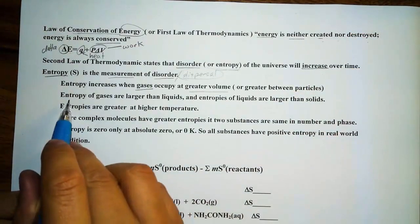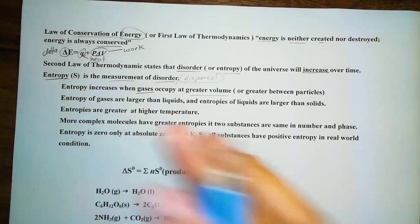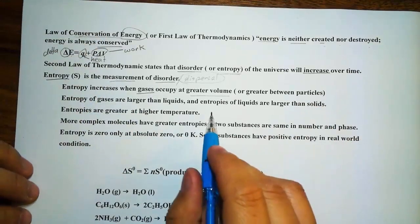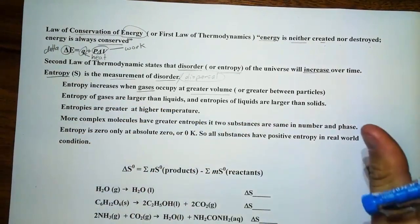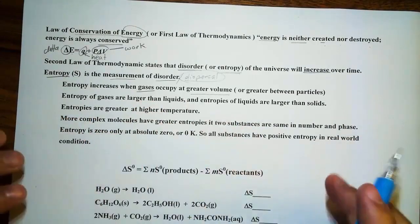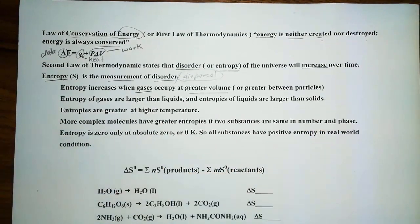And then we have the entropy of gases are larger, which is greater than liquid. Of course, we realize gas has more kinetic energy. It's more disordered than liquid. And then we compare liquid to solid. Of course, the entropy of liquid is more disordered than solid. Then we also have the entropy compared in terms of temperature. Of course, the entropy of substance at high temperature will be greater. Think of kinetic energy is more disordered when it vibrates faster.